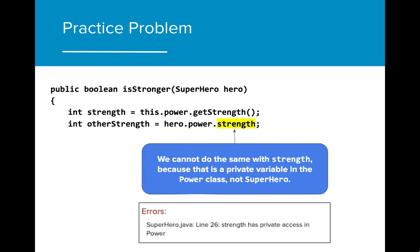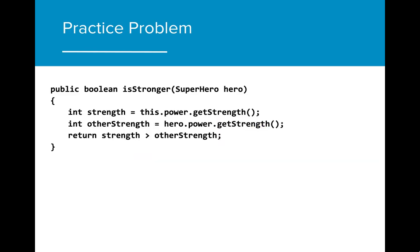We cannot do the same thing with strength because strength is an instance variable of the power class which is not a part of the superhero class. This will result in an error. Finally, we can return a boolean comparing the strength of the existing superhero to the superhero listed in the formal parameter.